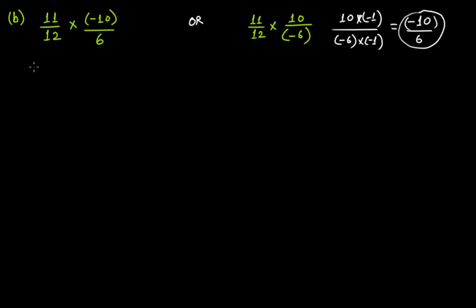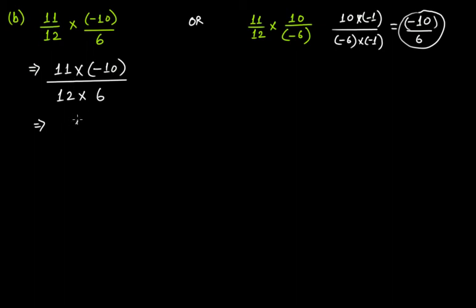Now multiply both the numerators together and then the denominators together. So 11 times minus 10, and then 12 times 6. If you multiply 11 and 10 you get 110, then put the minus sign, and the denominator is 72. Now if you find the highest common factor of 110 and 72 to simplify, the highest common factor is 2.